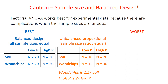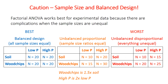The second-best case is unbalanced but still proportional: sizes are different, but there are consistent ratios between the factors. For example, wood chips always have one and a half times as many samples as soil, and high phosphate is always twice as many samples as low phosphate. The worst but probably most common type is the unbalanced and disproportional design, where everything's unequal and there aren't constant ratios.